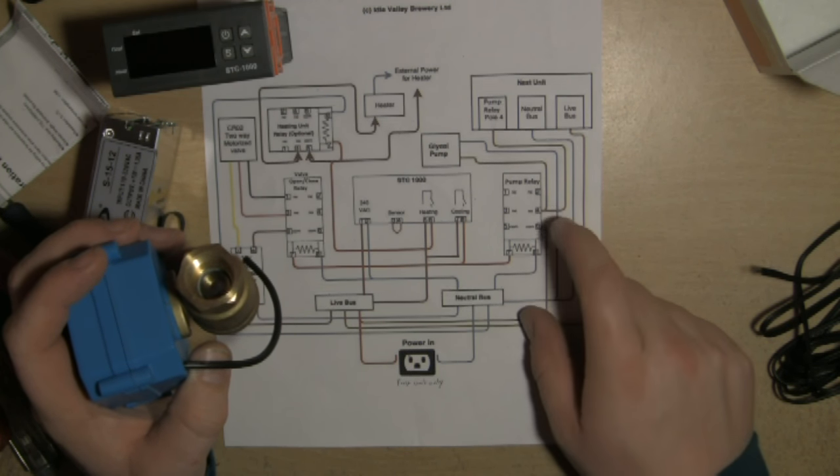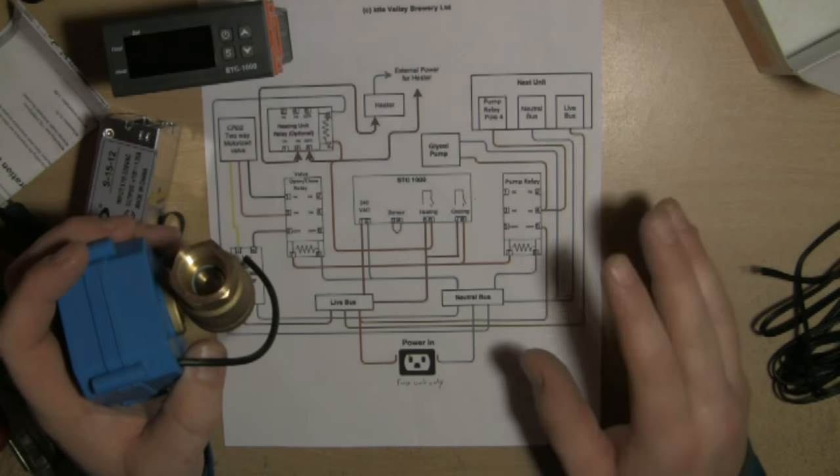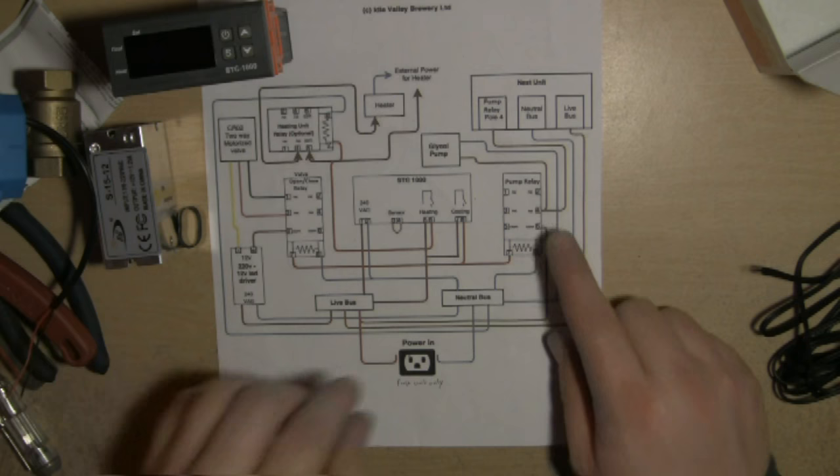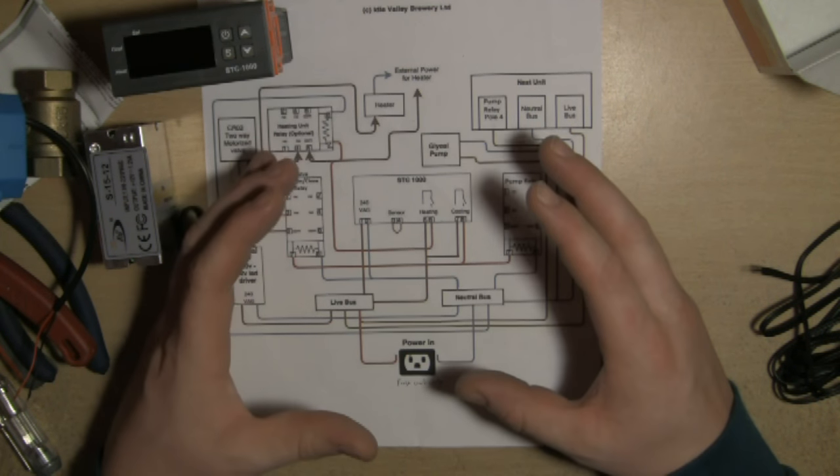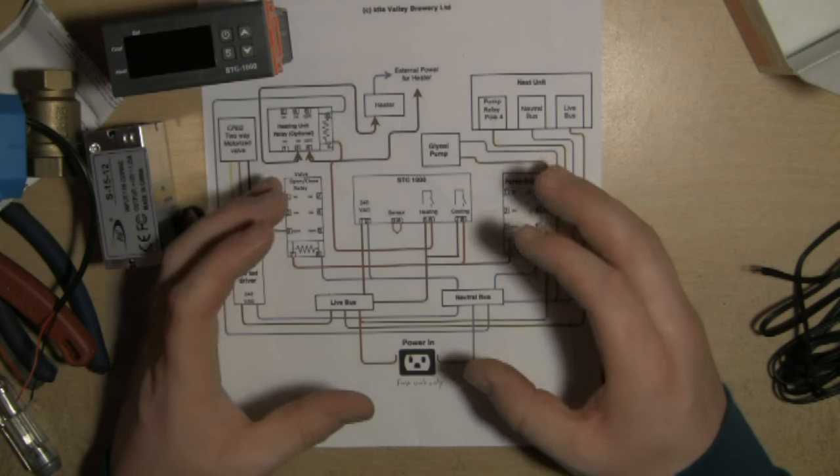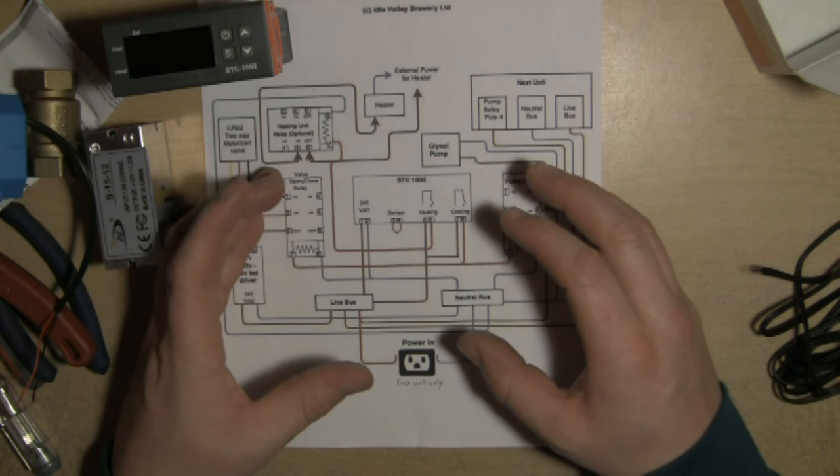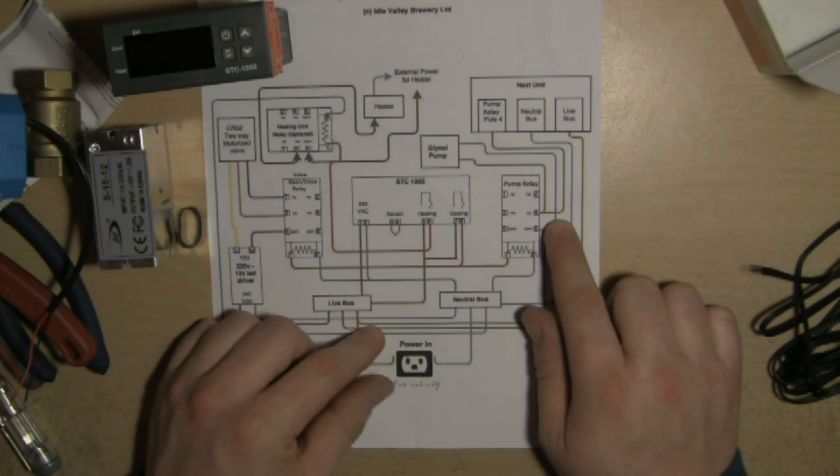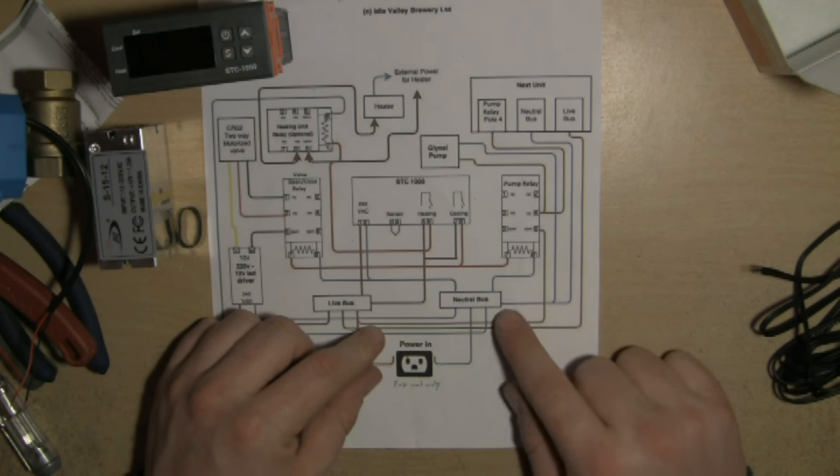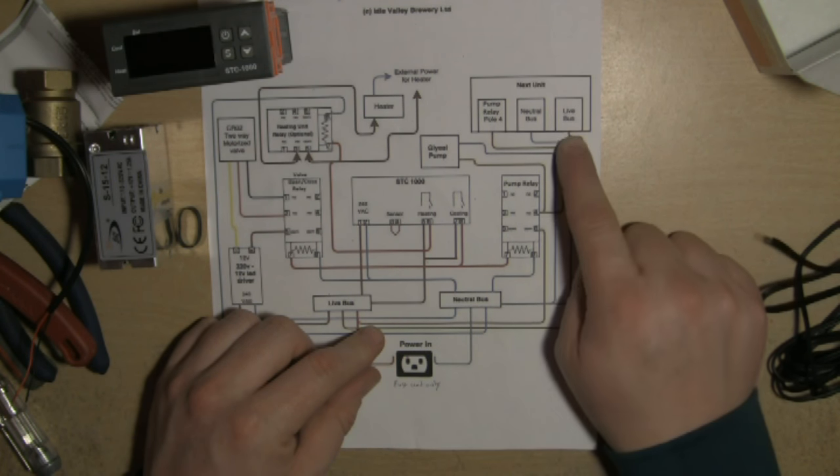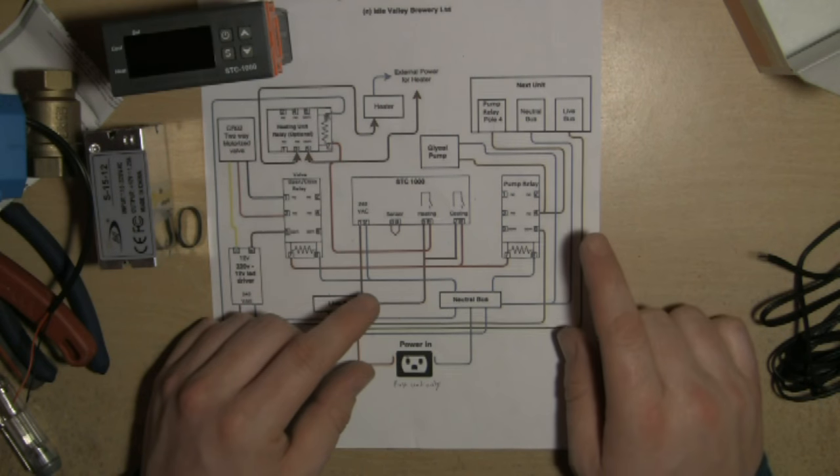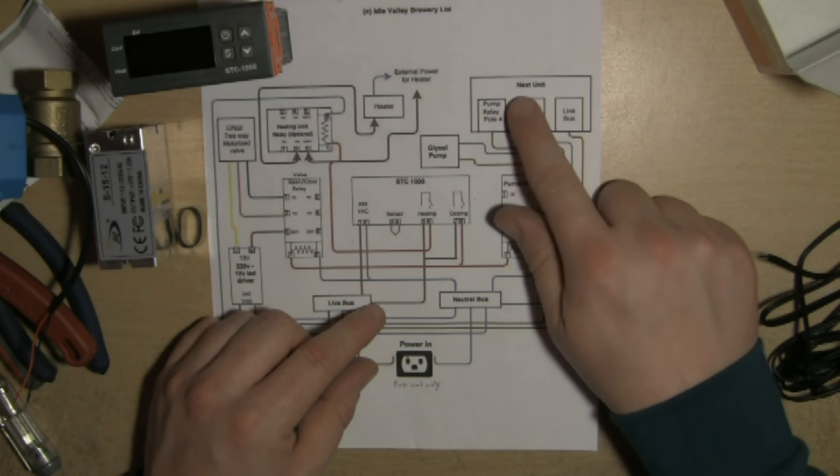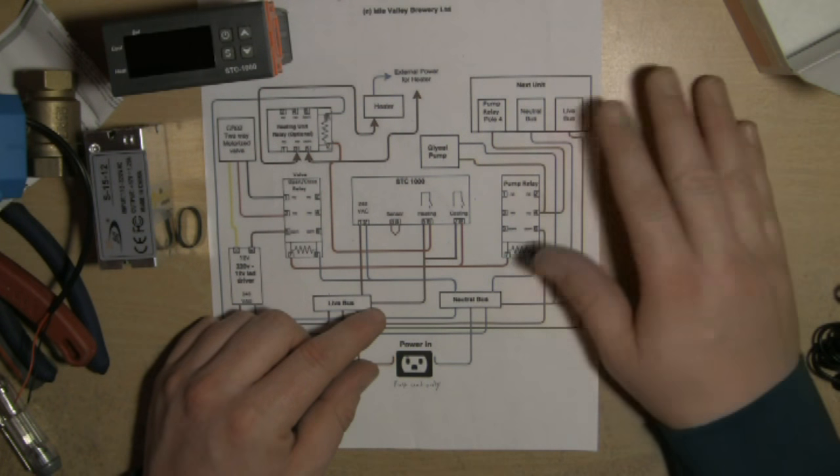After you've made one unit, you can daisy chain these units together. You'll have a couple of lines out enabling you to activate the glycol pump from the relay in the next unit and the next unit, depending. We've got nine of these all working in series.